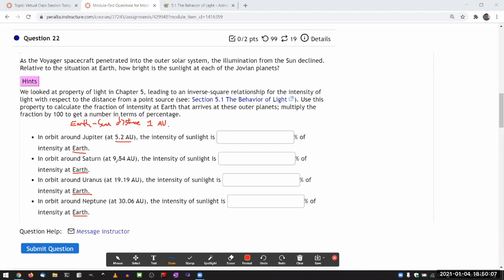So when they tell you that Jupiter is at 5.2 AU, it's actually telling you by what factor distance has increased from Earth to Jupiter by a factor of 5.2. So let me just pull out my calculator so that I can do the inverse of square calculation.